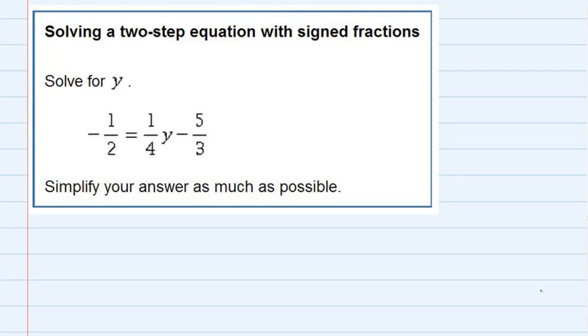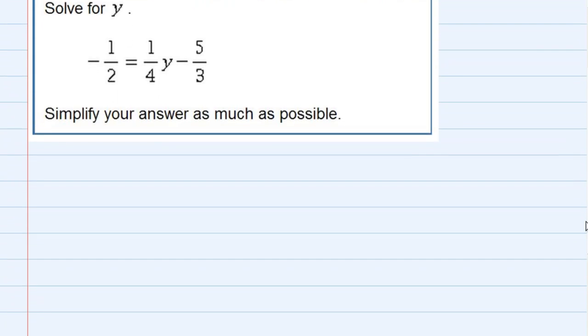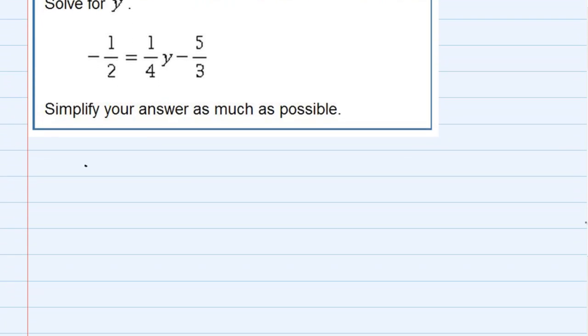Solving a two-step equation with signed fractions. We're asked to solve for y and we can see that we have several fractions here. So what I'd actually like to do is get rid of the fractions right off the bat. So the first thing I'm going to do is rewrite my equation. Negative one-half equals one-fourth y minus five-thirds.